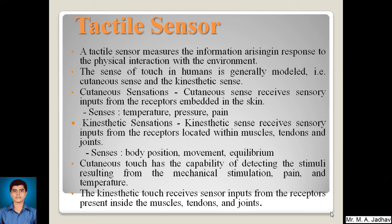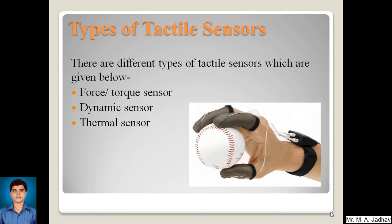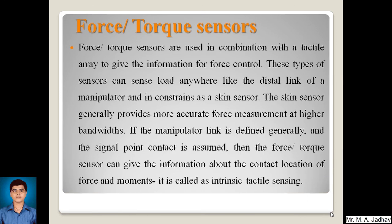The types of tactile sensors include force/torque sensors, dynamic sensors, and thermal sensors. First, force or torque sensors: these sensors are used in combination with a tactile array to give information for force control. These types of sensors can sense load anywhere, like the distal link of the manipulator, and in constraints as a skin sensor.